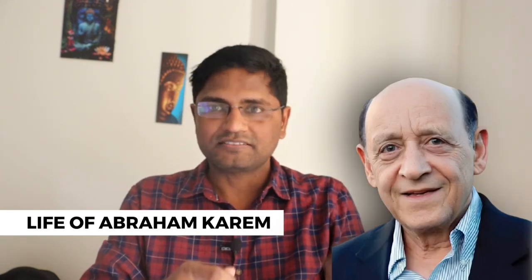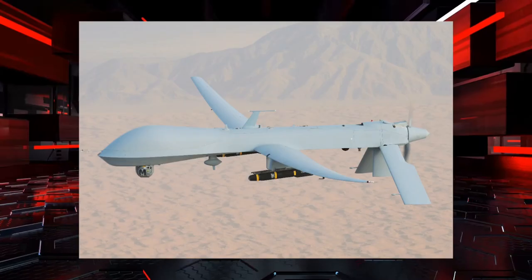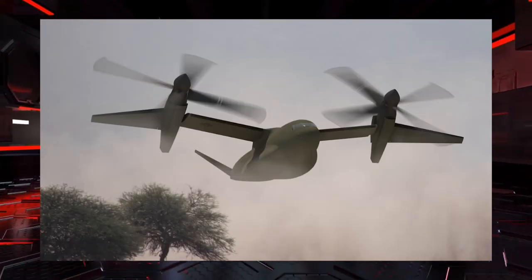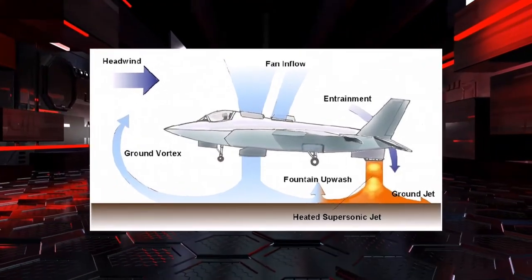This is Dhirendra. In this video we are going to talk about the life of Abraham Kareem, known as the founding father of drone technology in America. He has been the inventor and designer of the Predator drone and the Albatross/Amber. He and his small team did wonders in drone technology. Currently he is working on an optimum speed tilt rotor for vertical takeoff and landing with commercial payload capabilities.